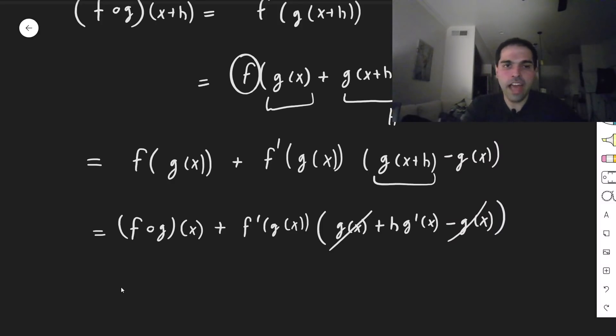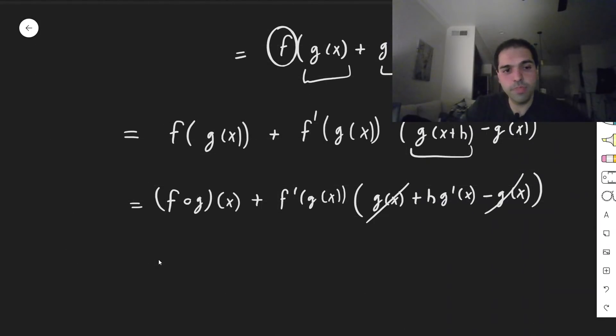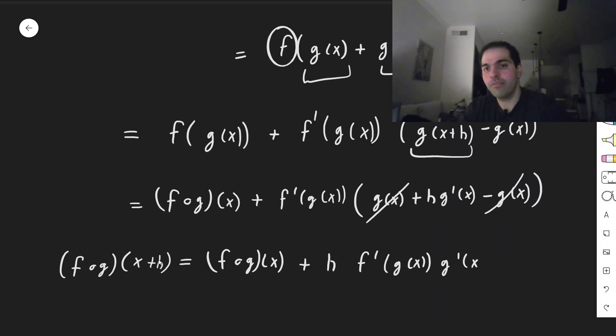This cancels out, and in the end, what you get is f composed with g of x plus h. So your function at x plus h equals the function at x plus exactly the term that we want, h times f prime of g of x times g prime of x.